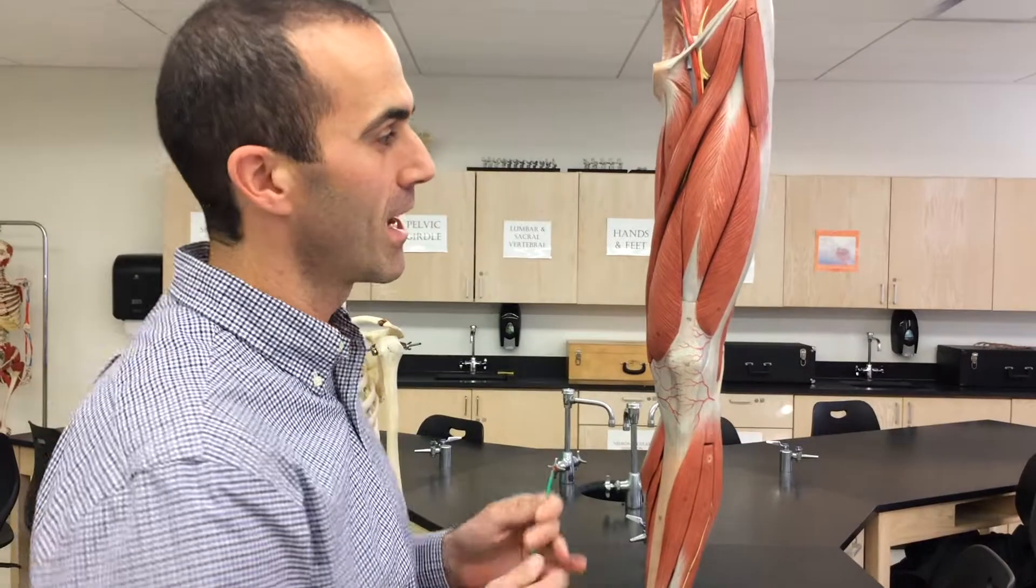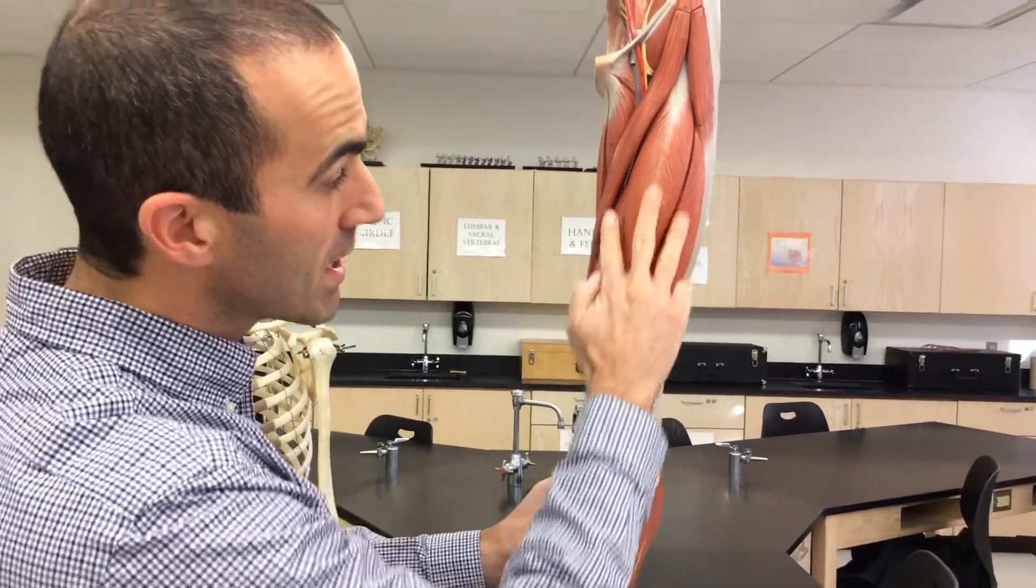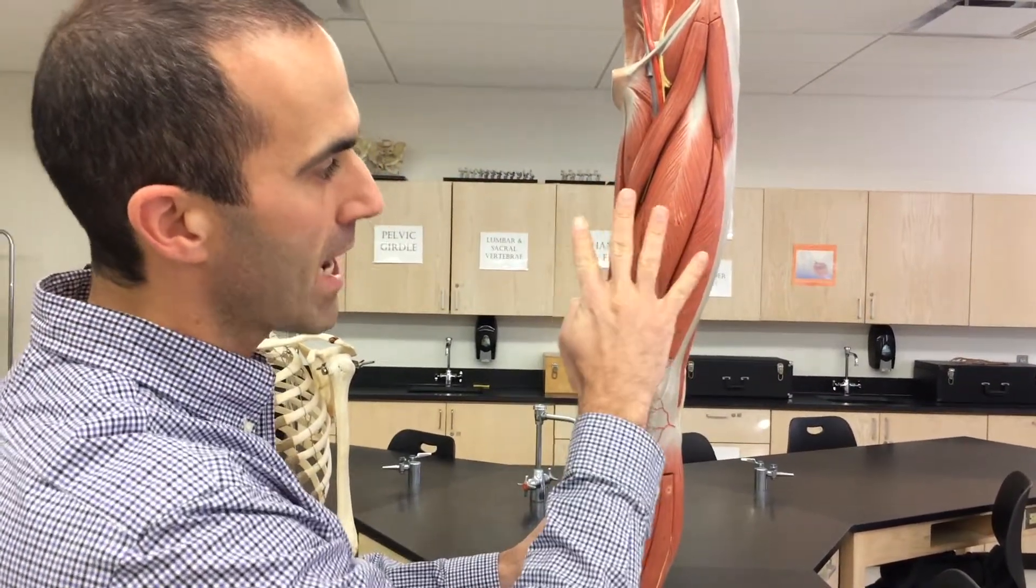Quadriceps are the muscles on the anterior side of your thigh. If you look here, you'll see three of them, but there are actually four of them.